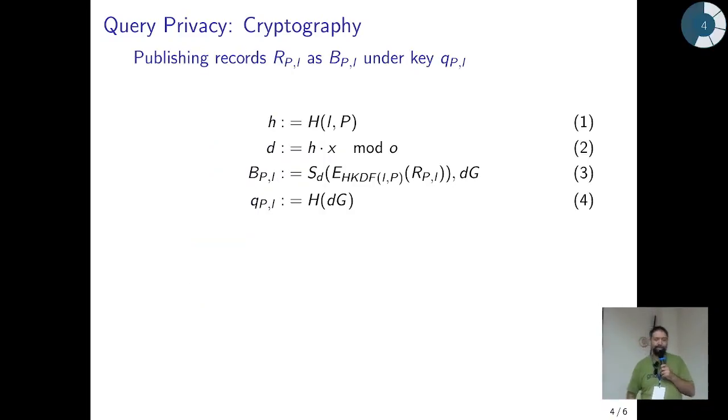And now here's the math for that. When you want to publish your records, you're going to hash the label and the public key to get small h, multiply that small h with your private key modulo o to derive a new private key d. Then you encrypt your records using a hash key derivation function, using symmetric encryption, and sign that with the derived private key, attaching the public key. You take the public key dG, hash that, and that's the query under which you publish these records. This is the core idea of the GNU name system on the cryptography.